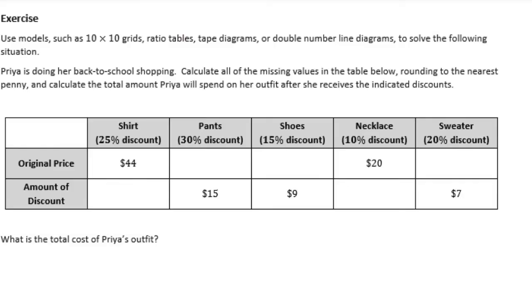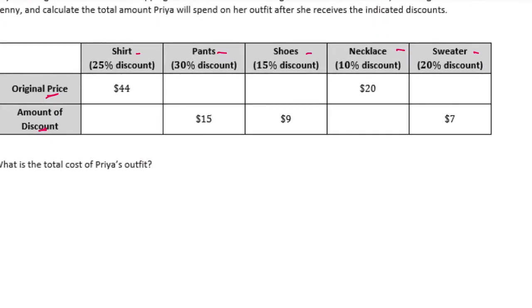Exercise: use models such as 10 by 10 grids, ratio tables, tape diagrams, or double number line diagrams to solve the following situation. Priya is doing her back-to-school shopping. Calculate all of the missing values in the table below, rounding to the nearest penny, and calculate the total amount Priya will spend on her outfit after she receives the indicated discounts. She's getting a shirt, pants, shoes, necklace, and sweater. They either give us the original price or the discount amount, and we need to figure out the rest.